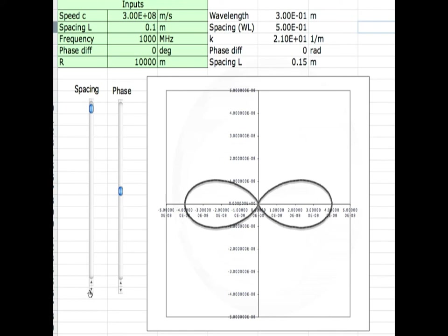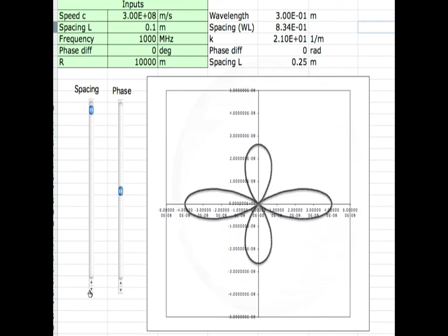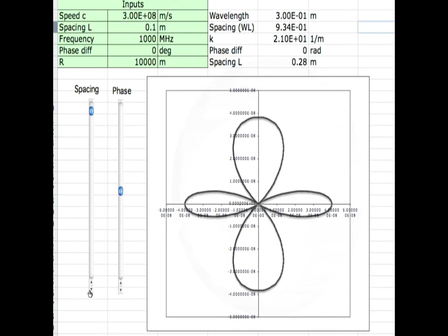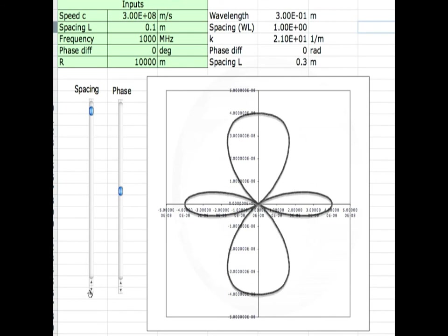Now watch what happens as I get further apart. Okay, something starts to grow at the top and bottom and right about there you're at another half wavelength apart, you've got these big giant side lobes.